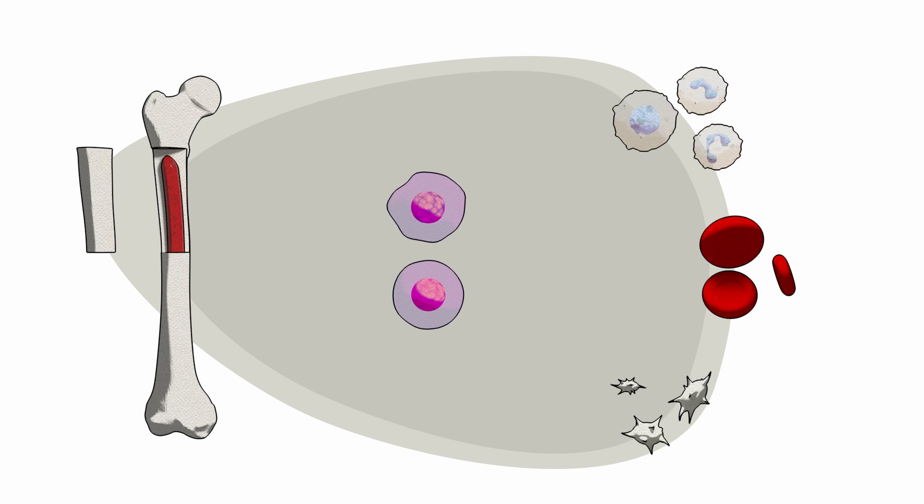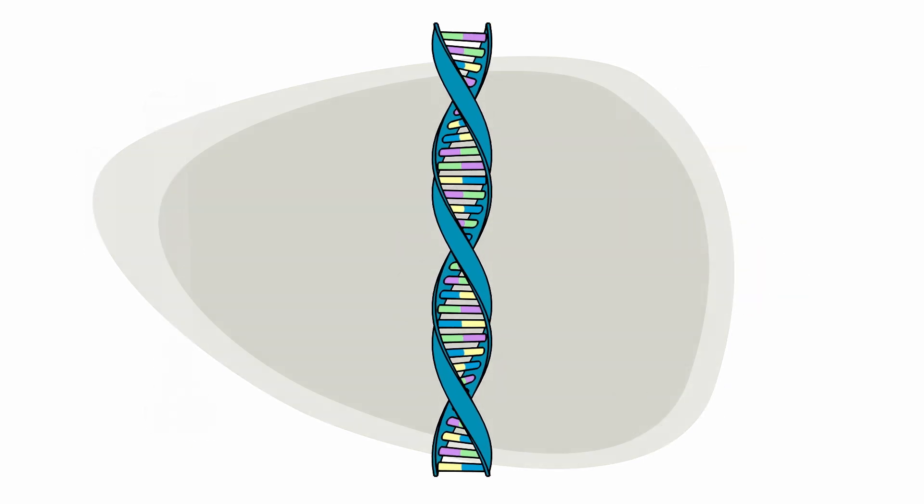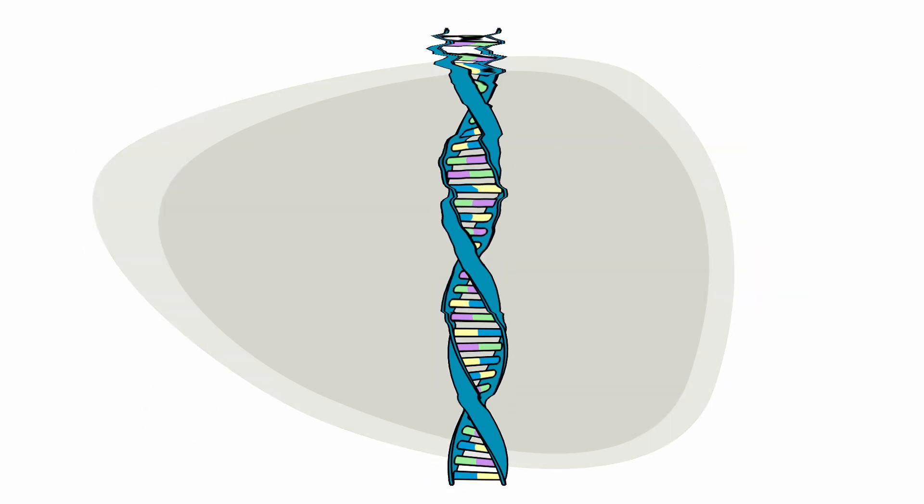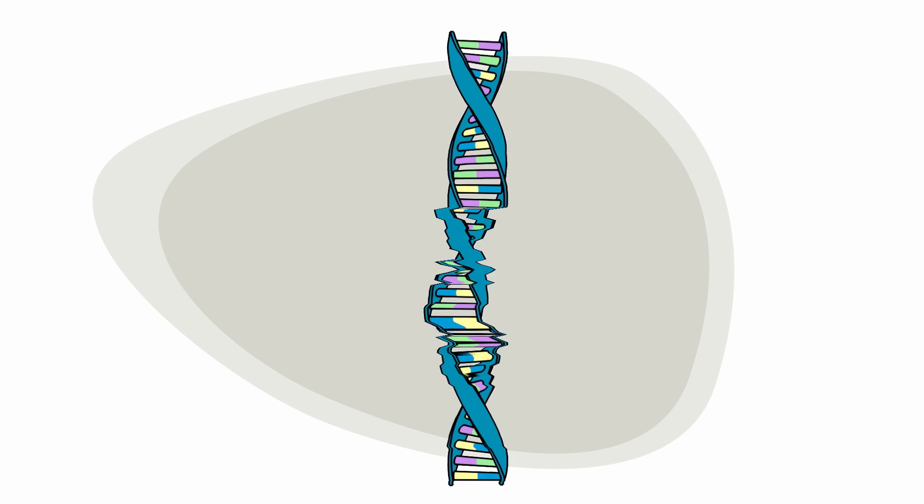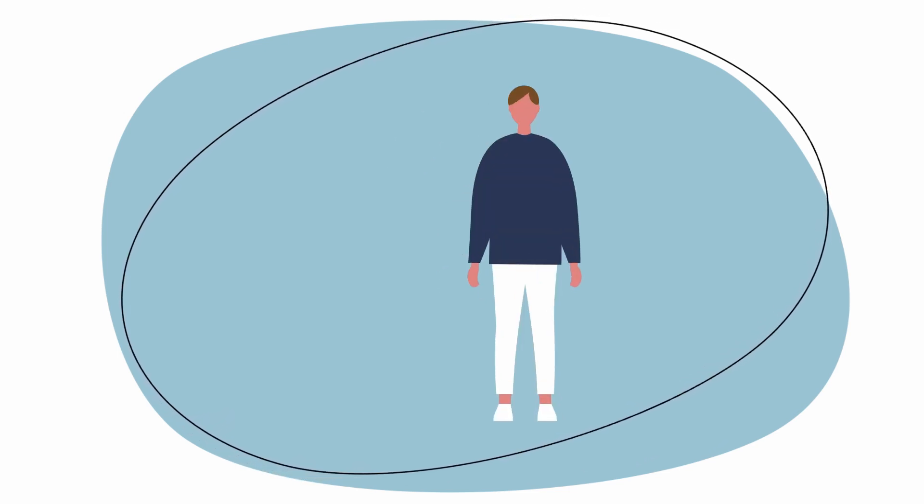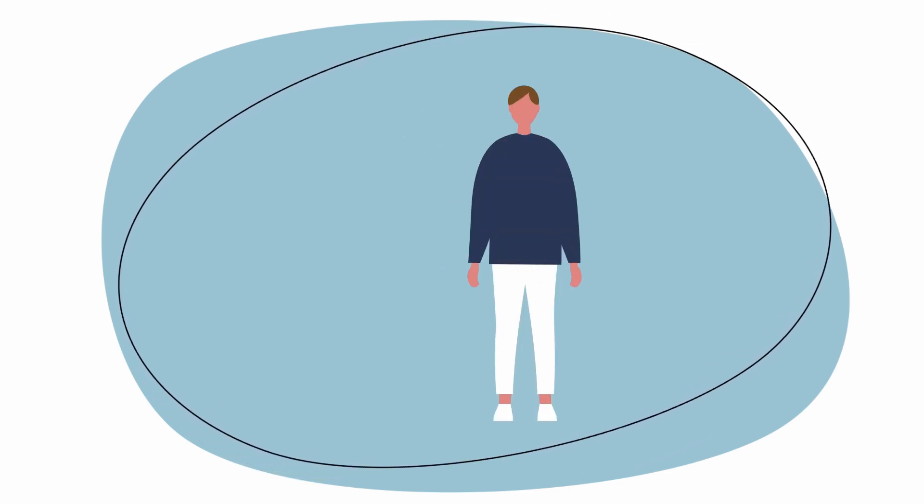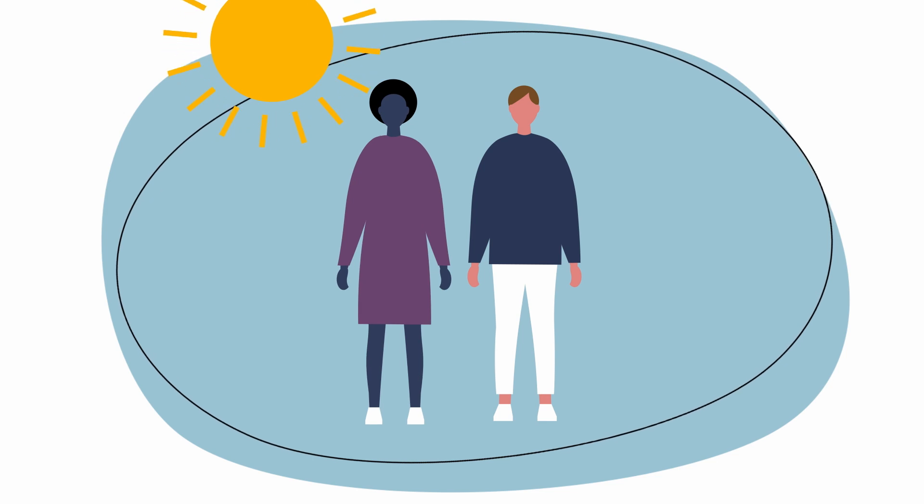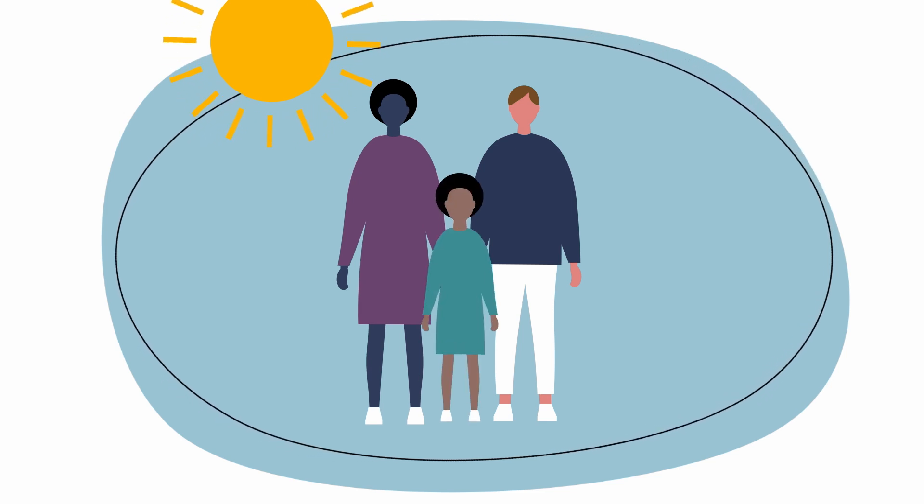In CML, something goes wrong with the DNA in bone marrow cells, causing normal bone marrow cells to become leukemia cells. We don't know why this DNA damage happens to some people during their lifetime, but we know it cannot be inherited from a parent or passed on to children.